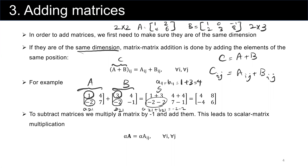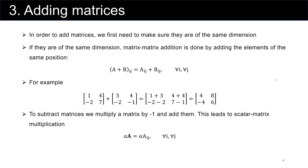To subtract matrices, we simply multiply a matrix by minus 1 and then add those two matrices. There are some properties for matrix addition that we are going to talk about now.